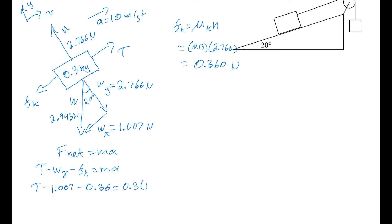T minus 1.007 minus 0.36 equals 0.3. Oh, and we know what A is? A is 1. So we can actually work all that out. 0.3 times 1 plus 0.36 plus 1.007 tells us that T equals 1.667 newtons.